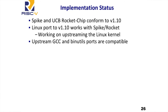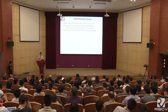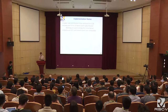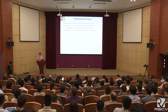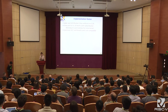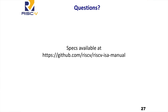Regarding implementation status: we only just released the spec a day ago, but in parallel we've been working on software and hardware implementations. Spike, our ISA simulator, and UC Berkeley's Rocket chip both already conform to the 1.10 privilege architecture. We have Linux running on the 1.10 privilege architecture with Spike and Rocket, and we're in the process of upstreaming it — hoping to send an initial patch set to the Linux mailing list by end of May, with a full Linux upstream in the summer. The upstream ports of GCC and binutils are also compatible with the privilege architecture.